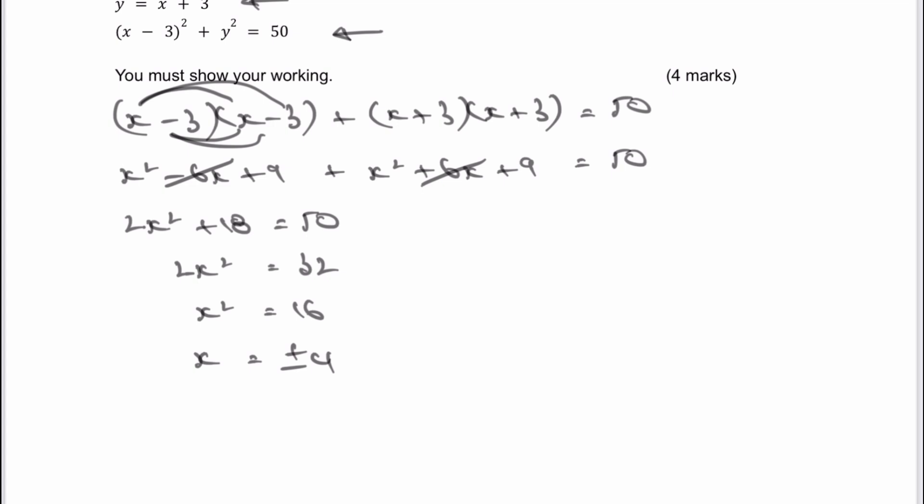And then taking those two values of x, I can put it directly back into y equals x plus 3. So I can write when x equals positive 4, y equals x plus 3. So therefore, y equals 7. So that's my first two values.